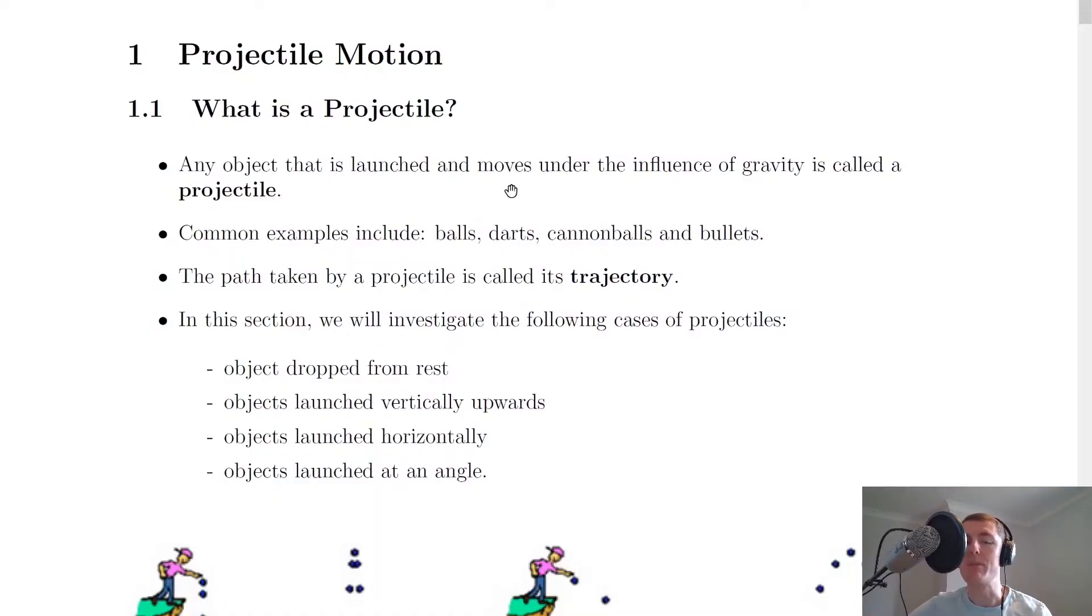We say that any object that is launched and moves under the influence of gravity is called a projectile. Some common examples of projectiles that you'll see in the higher physics course include things like balls, darts, cannonballs and bullets, as all of these can move with projectile motion.